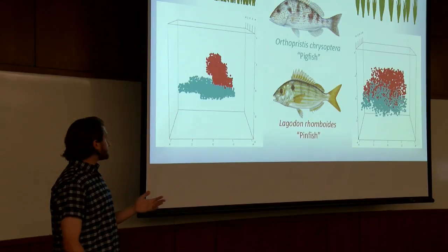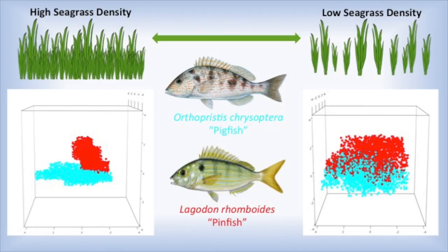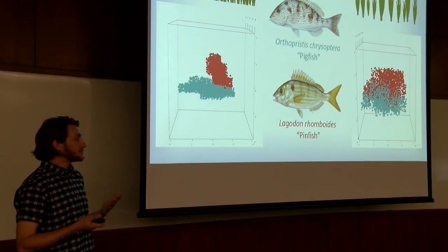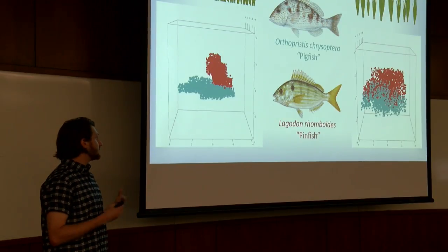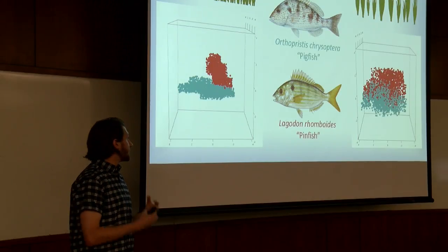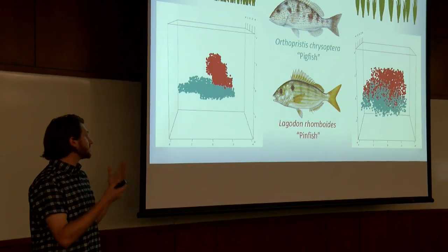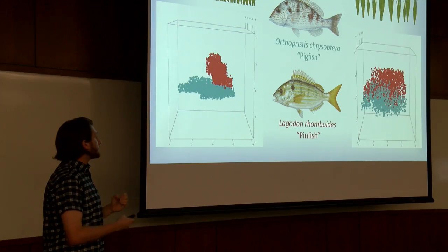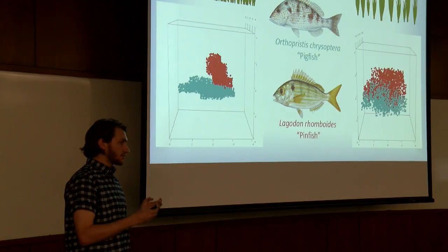As an example, we're looking at two very similar seagrass-associated fish species: pigfish and pinfish. We can see that at high seagrass densities, they have very tight, compact niches. But in the same habitat, as you move to low density of seagrass, these niches expand and overlap into each other. This is because food is less available at low seagrass densities, so to meet their energetic demands, they need to expand into other species' areas. This demonstrates how a gradient within a habitat can affect food web structure, and how this tool can understand gradients at a much finer scale.